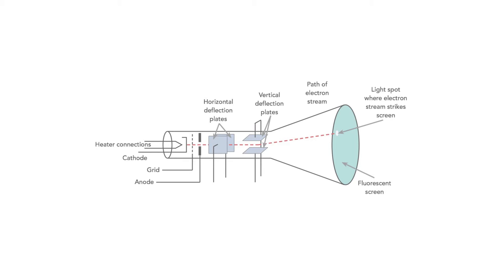When the electron stream hit the screen, it struck a phosphor coating that glowed in the area where the electrons hit, giving a spot of light. Moving this enabled the waveform to be displayed.